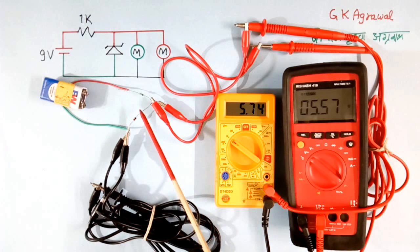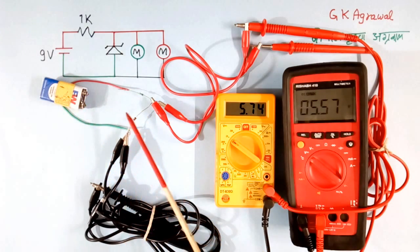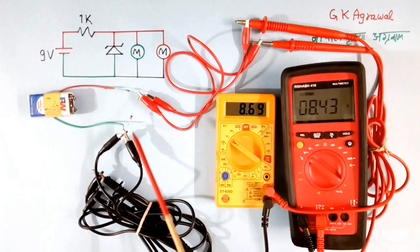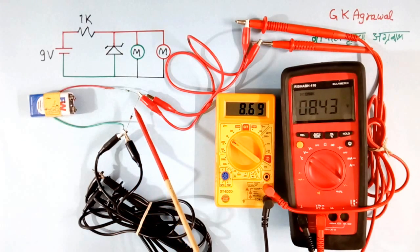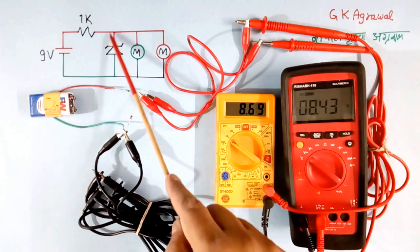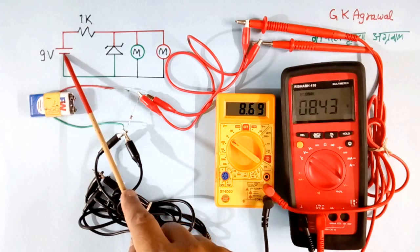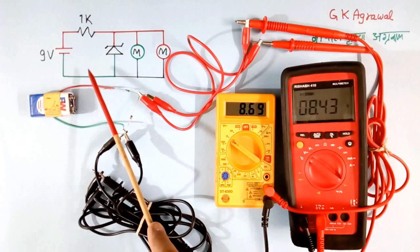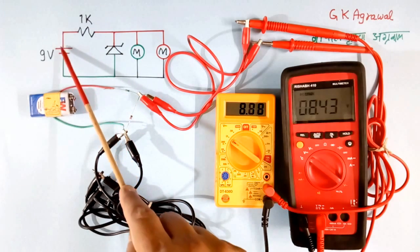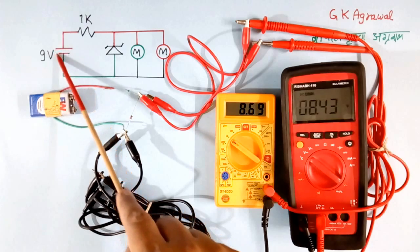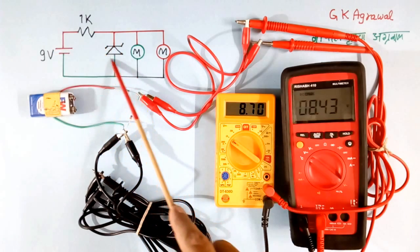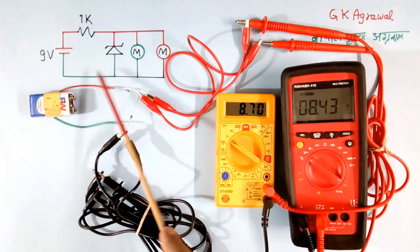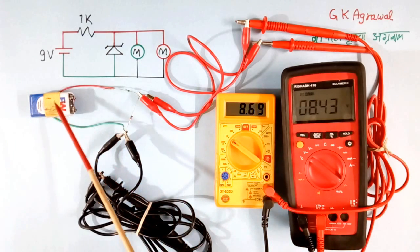Now I will connect a Zener diode whose voltage is more than the battery voltage. Let us see what happens. Now here I have connected a Zener diode which has voltage more than battery voltage. In that case, this circuit will not work. It is necessary that the voltage of this battery should be at least 1 or 2 volts more than the Zener diode voltage. Otherwise it will not read, the multimeter will read only battery voltage, not Zener diode voltage.